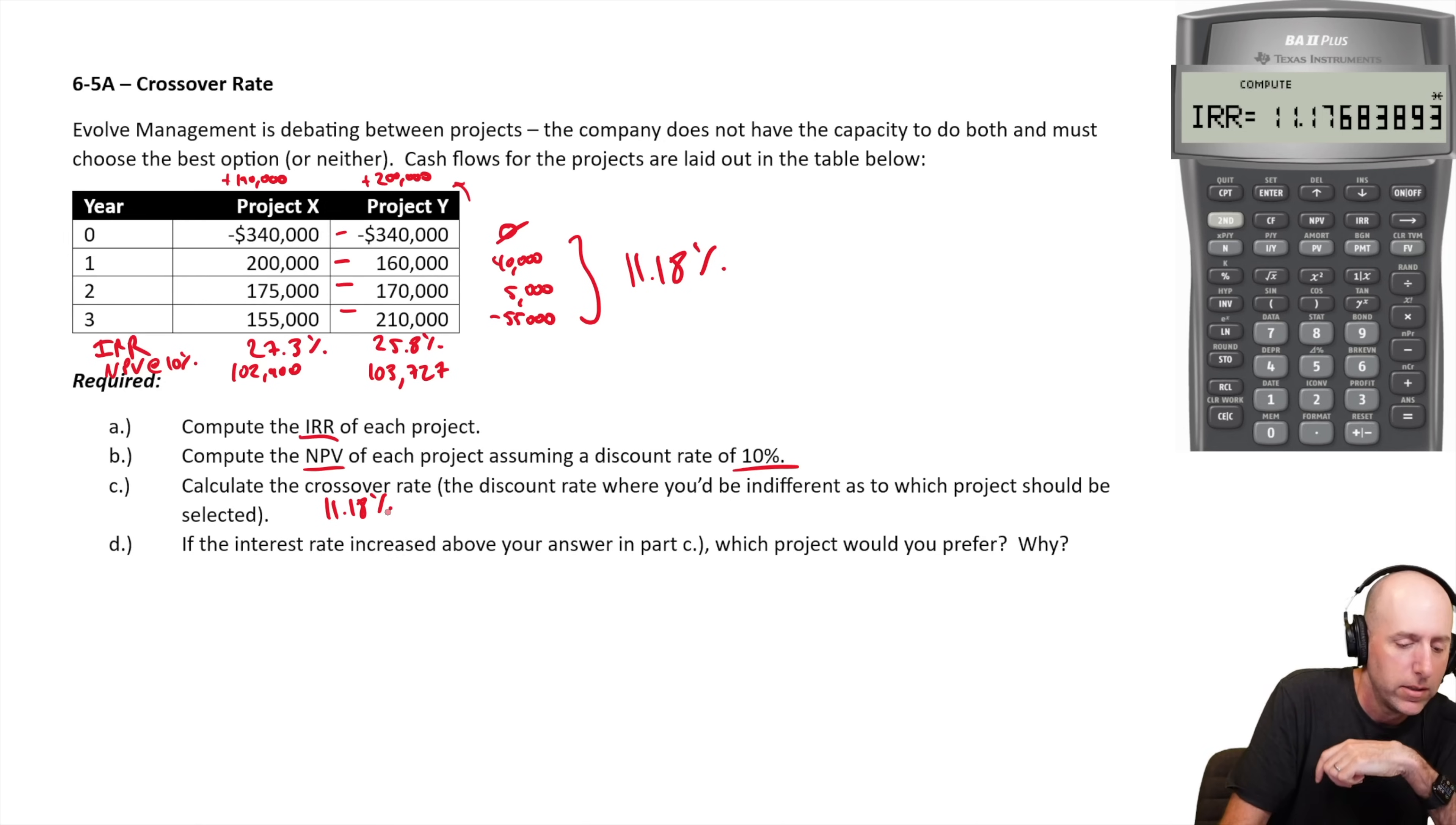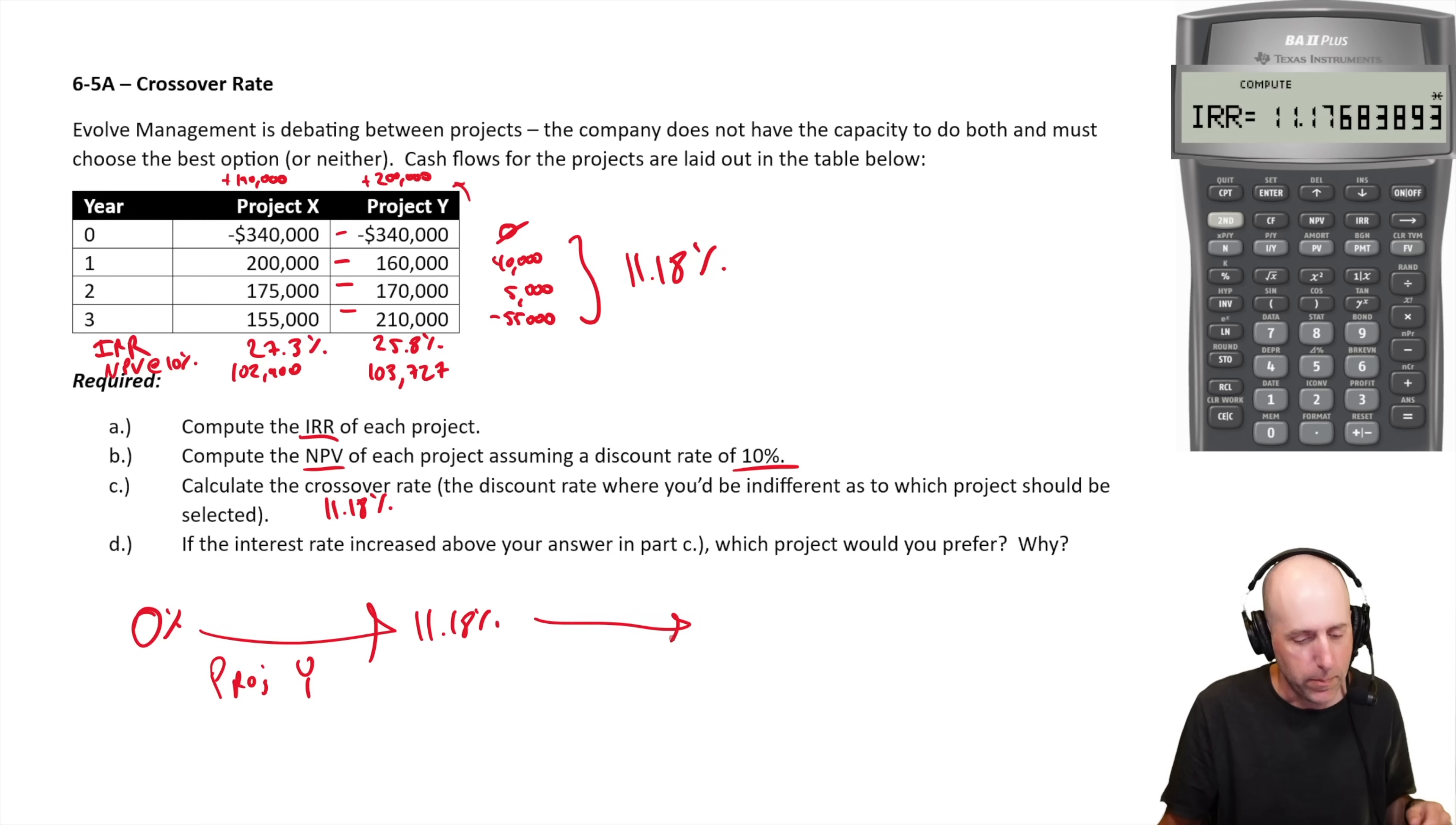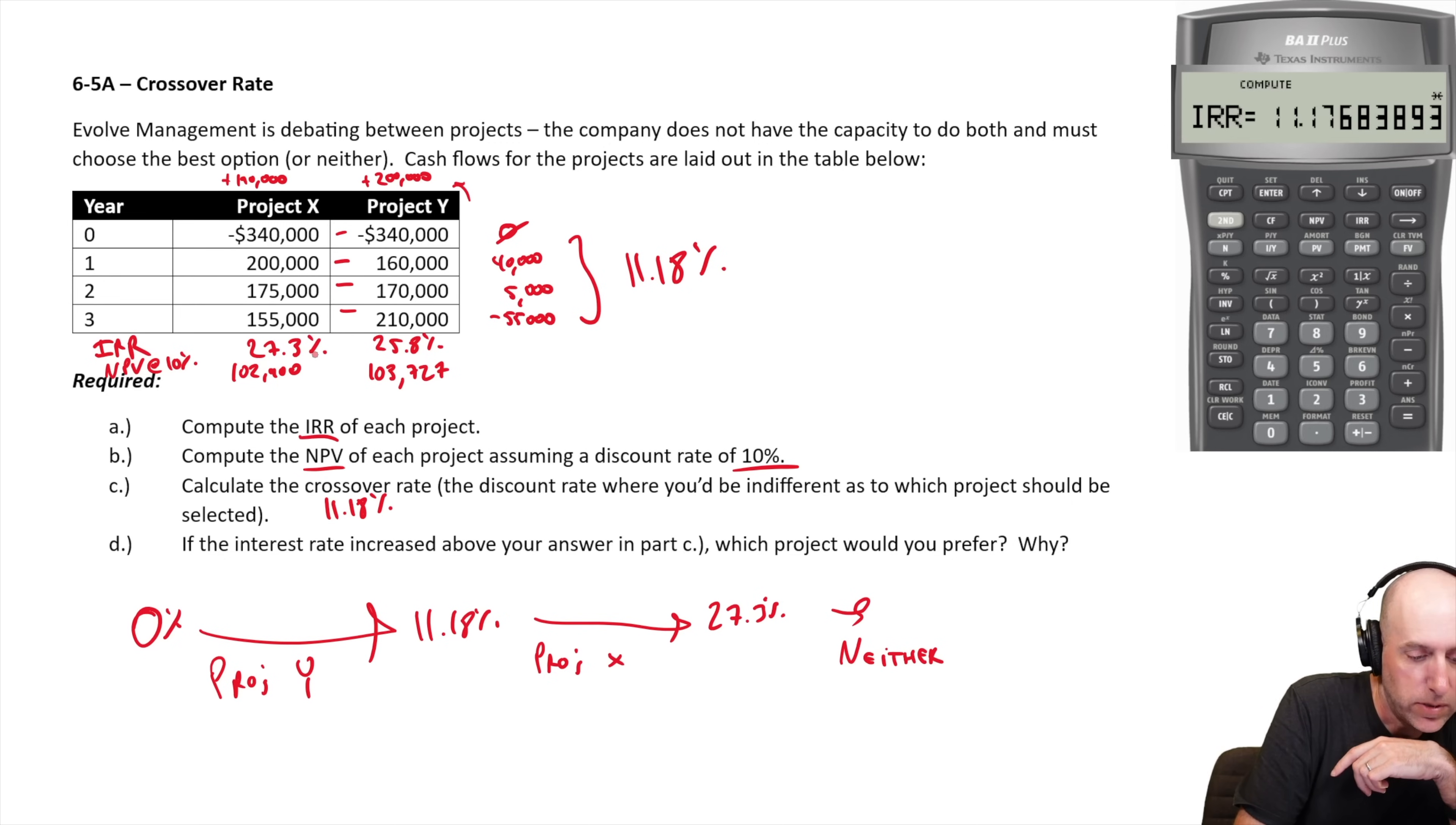So just to draw this on a chart, from 0% to 11.18%, we would pick project Y. From 11.18% to, I guess, 27.3%, we prefer project X. And after 27.3%, we prefer neither. We would just say don't do either because we're losing money. Because 27.3% is the internal rate of return of project X. Above that, the net present value is zero. In fact, above that, it's negative. 27.3% is where the net present value is zero. So above 27.3%, we would just not do either project.